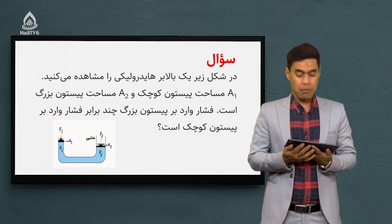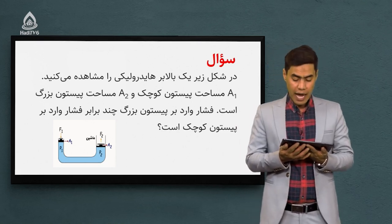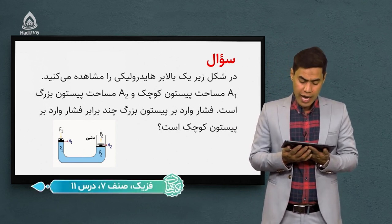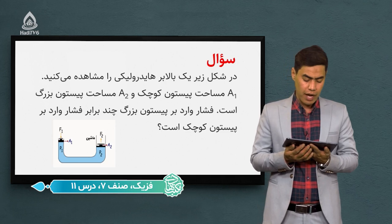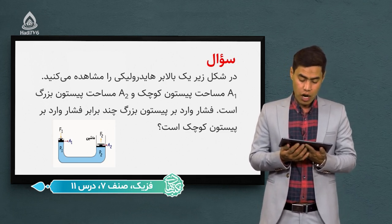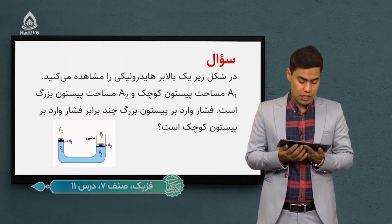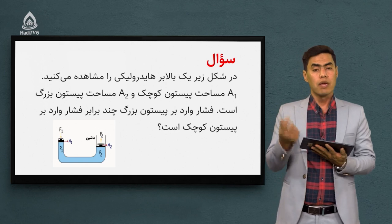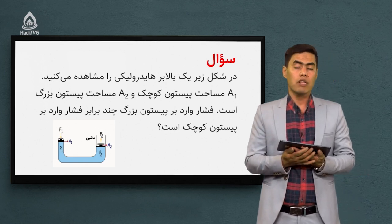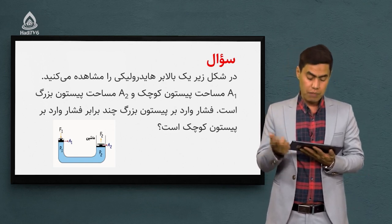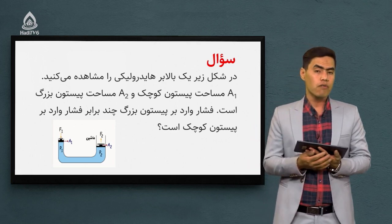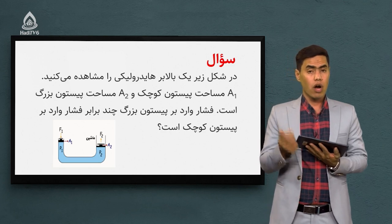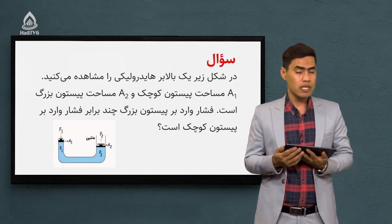مثال اول را با هم میخوانیم. گفته که در شکل زیر یک بالابر هیدرولیکی را مشاهده میکنید. A1 مساحت پیستون کوچک و A2 مساحت پیستون بزرگ است. فشار وارد بر پیستون بزرگ چند برابر فشار وارد بر پیستون کوچکتر است؟ شما جواب این سوال را به من بدهید. چند برابر؟ راهنمایی میکنم: از اصل پاسکال استفاده کنید.